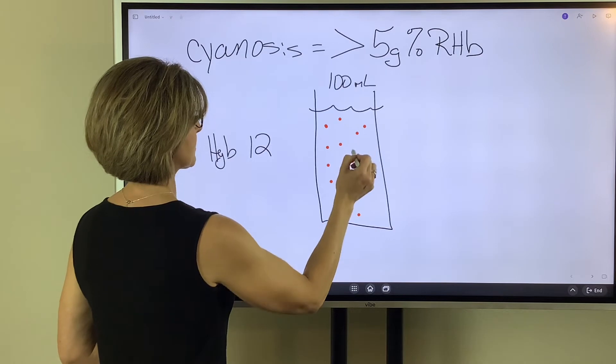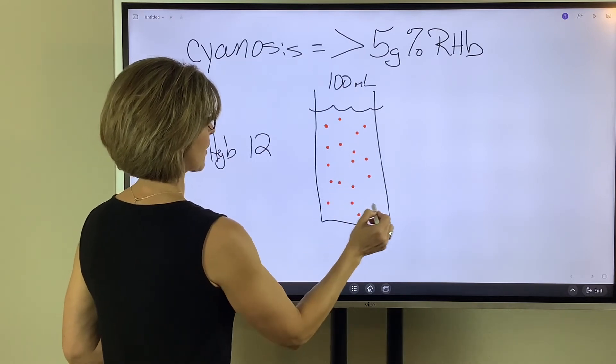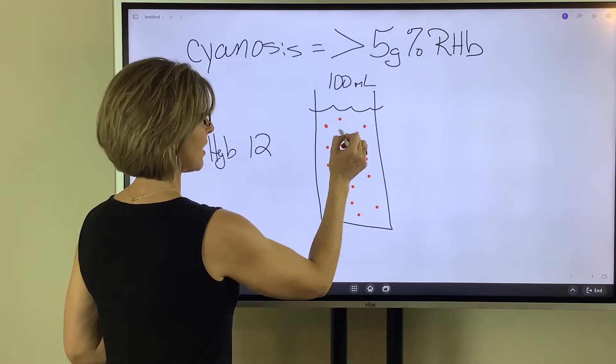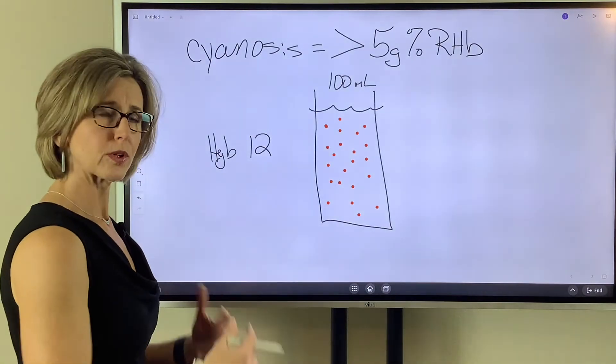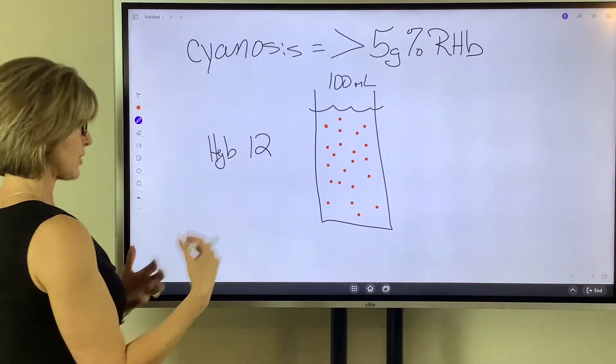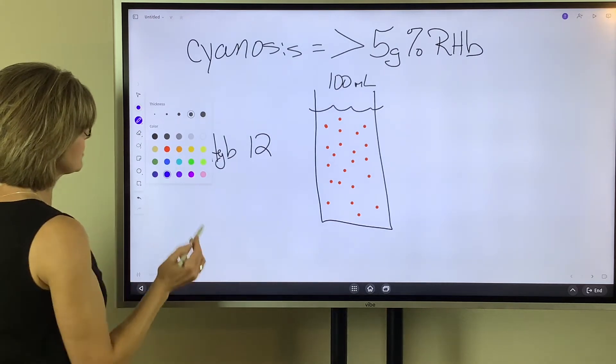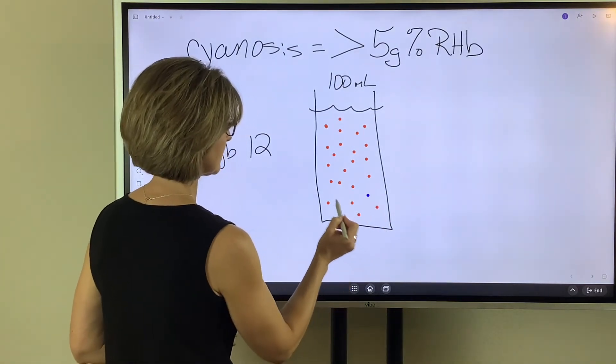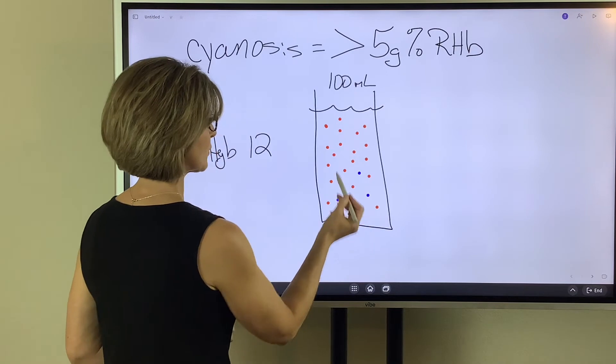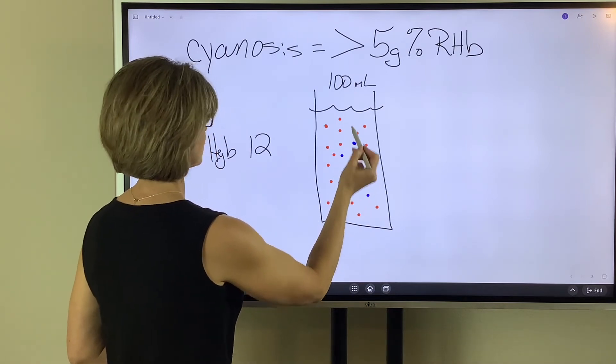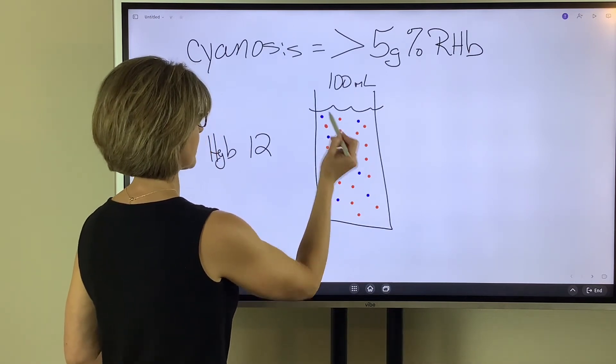All right, so this is the hemoglobin. These little red dots are the hemoglobin that's oxygenated, fully saturated with oxygen. But we all have just a little bit of hemoglobin that is reduced. It doesn't contain oxygen, nothing's on it.